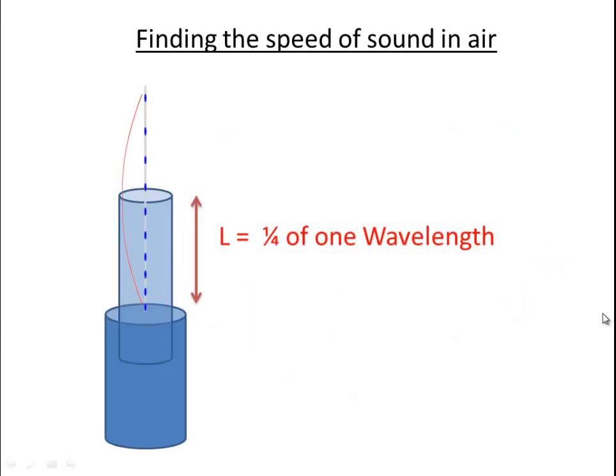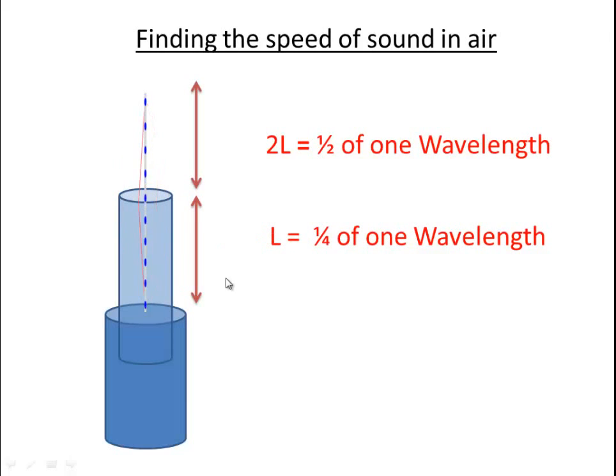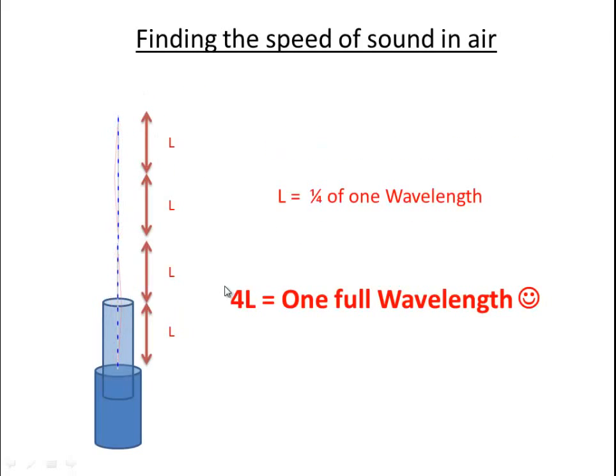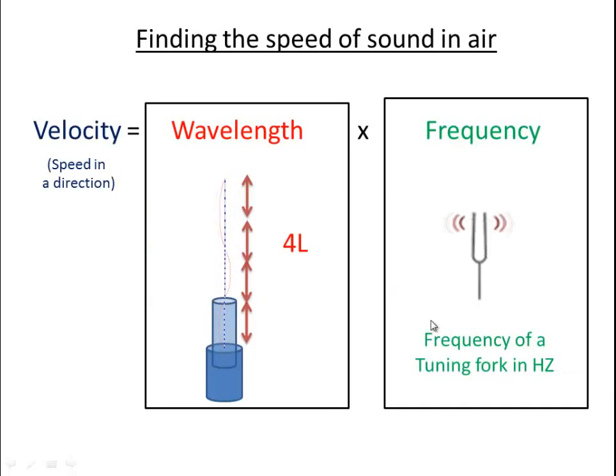So when a pipe is closed at one end and open at the other, the antinode will be just hovering over the edge of the pipe. And that's one quarter of a wavelength. Twice that would be half of a wavelength, and four times that will be one full wavelength. Now we've got wavelength times frequency is four times that length of the pipe, times the frequency. So that's a tuning fork.